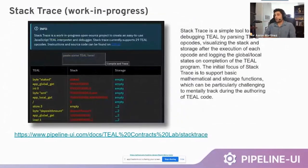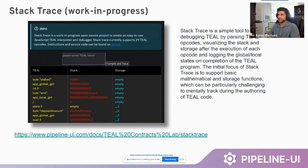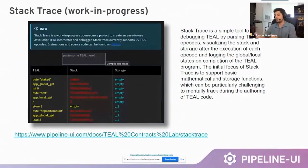This is something that is a work in progress that's really exciting, and it also works directly on the front end of our website. It's called Stacktrace. Stacktrace is a simple tool to aid in debugging Teal by parsing Teal opcodes, visualizing the stack and storage after the execution of each opcode, and logging the global and local states on completion of the Teal program. The initial focus of Stacktrace is to support basic mathematical and storage functions, which can be particularly challenging to mentally track during the authoring of Teal code. If you're working with Teal in your own environment, you can paste that Teal directly into this application and it'll visualize the stack for you. We're at about 75-80% right now, and you can already do quite a lot.